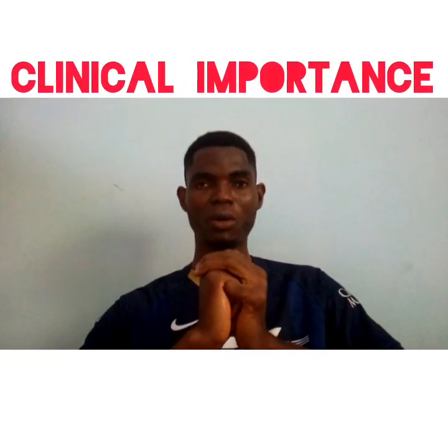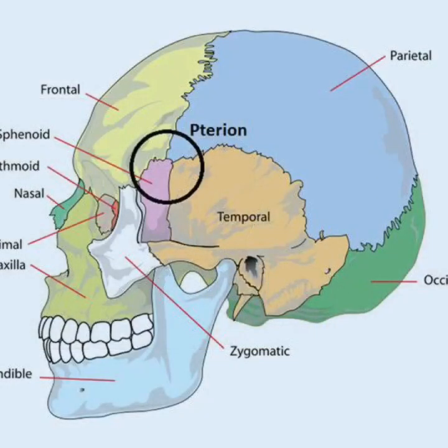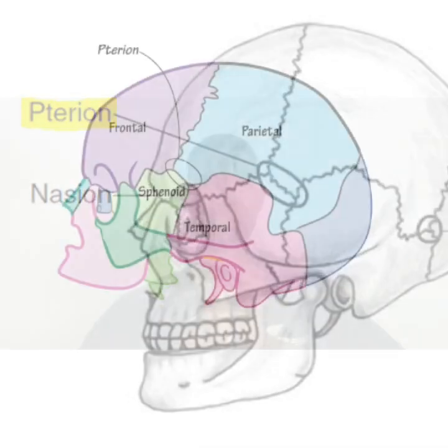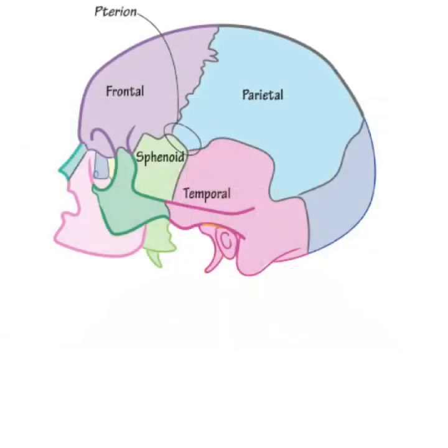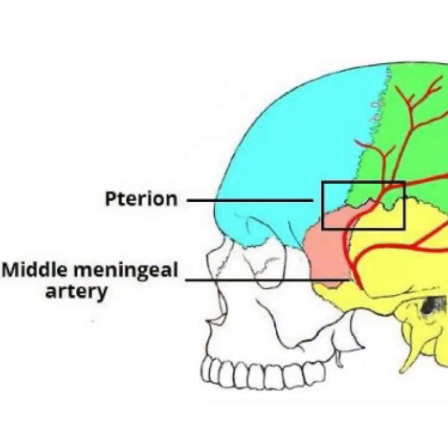Now let's talk about the clinical implication associated with damage of the skull, which is the cranial fracture. The cranial fracture could result from collision or heavy trauma to the skull. There is an important landmark in the skull known as the pterion — a H-shaped junction where the frontal bone, the parietal bone, the temporal bone, and the sphenoid bone come together. The pterion overlies an important artery known as the middle meningeal artery, and damage to this artery leads to blood being accumulated between the skull and the dura mater, which is known as the extradural hematoma.